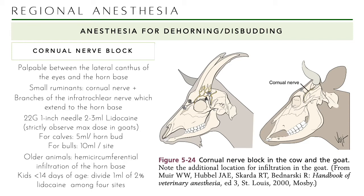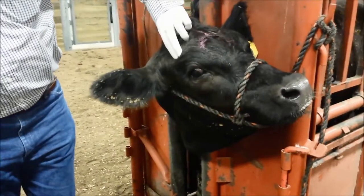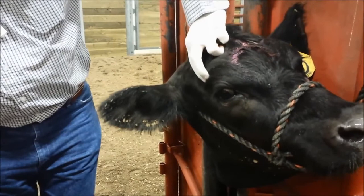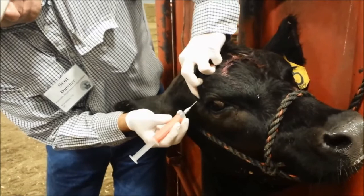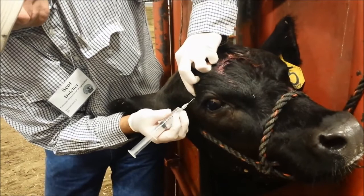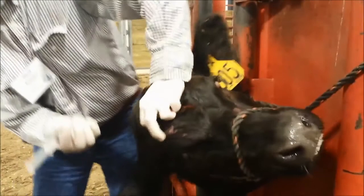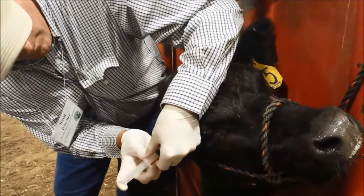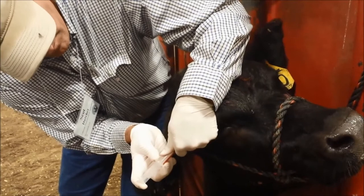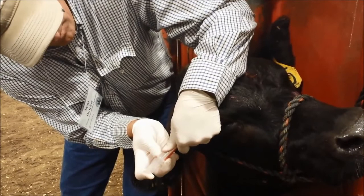Since goats are very sensitive to lidocaine toxicity, you divide the maximum dose of lidocaine throughout the horn to make sure every drop is used efficiently. In the video, you can see the injection is right on that line between the corner of the eye and where the horn would be. A deposit of 3 to 10 cc's is used depending on the size of the animal. It typically takes two to three minutes to work; if you don't get it right on the nerve, it may take a little longer.